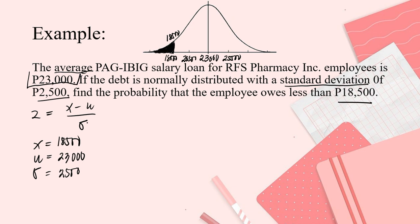And to get that, you will use the formula for Z. So that is X minus mean divided by SD. And that is P18,500 minus P23,000 divided by P2,500, which is the SD. So subtract P18,500 minus P23,000. Since the bigger number is being subtracted by the smaller, the answer will be negative. So that is negative P4,500 divided by P2,500.